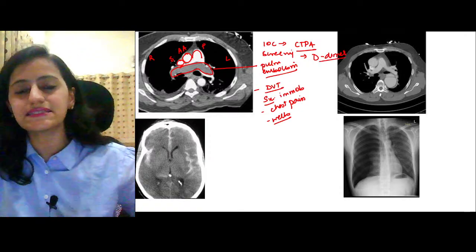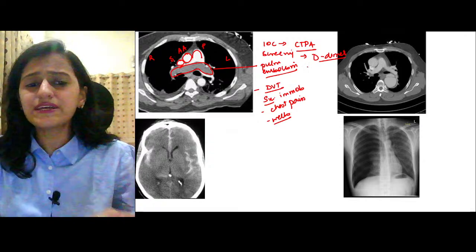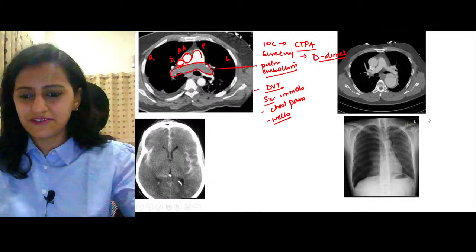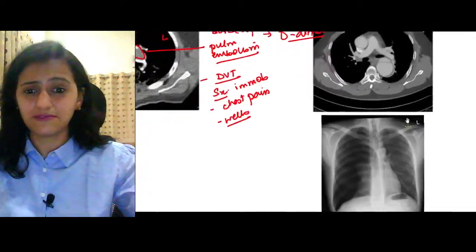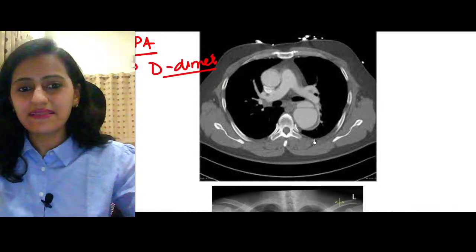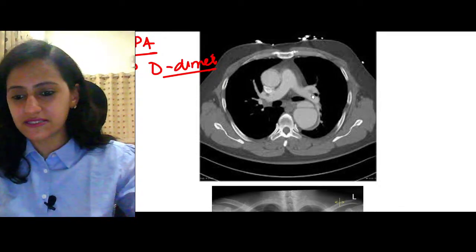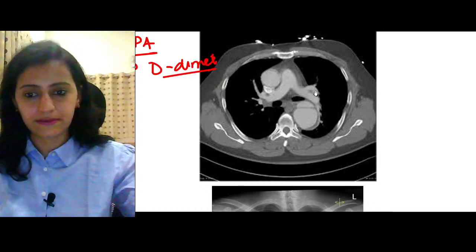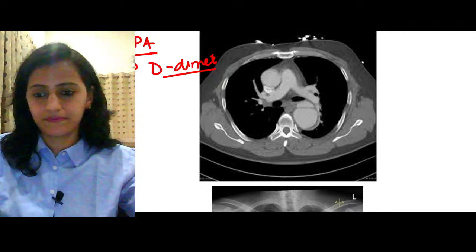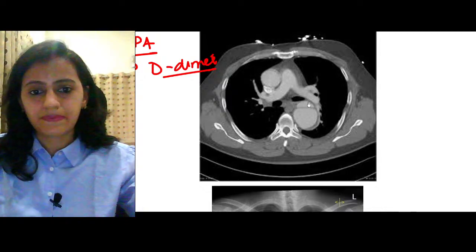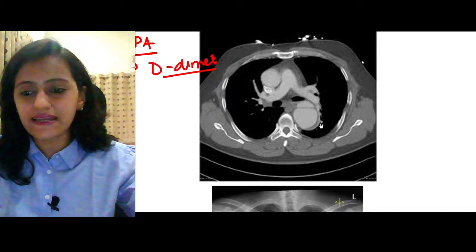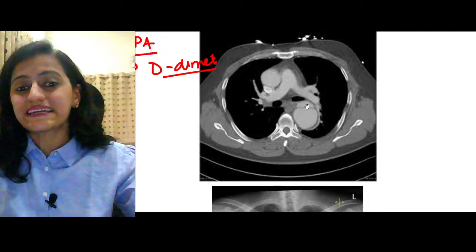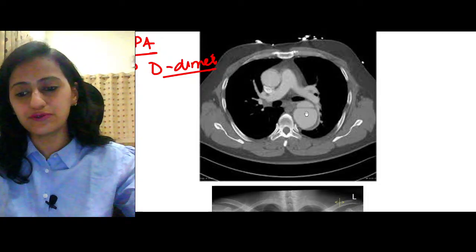The investigation of choice for pulmonary embolism is CTPA — CT pulmonary angiography. The screening test is D-dimer. Now look at the next image — this is the descending aorta showing dissection, divided into two lumens. This is aortic dissection.